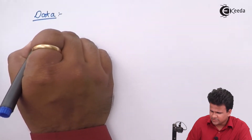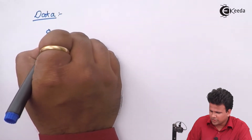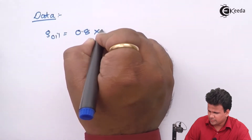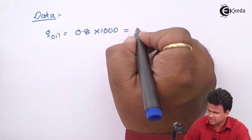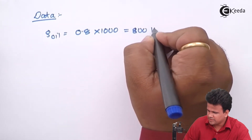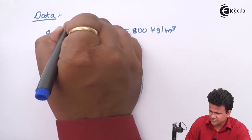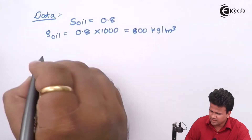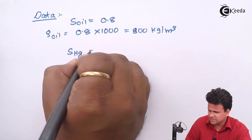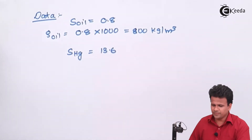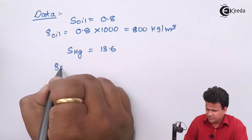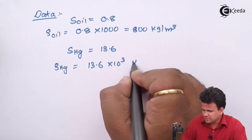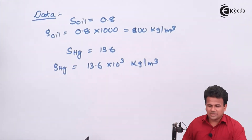The specific gravity of crude oil is 0.8, so its density is 0.8 into 1000, which gives us 800 kg per meter cube. The specific gravity of mercury is 13.6, which we already know, and the density of mercury is 13.6 into 10³ kg per meter cube. These are the values we know.